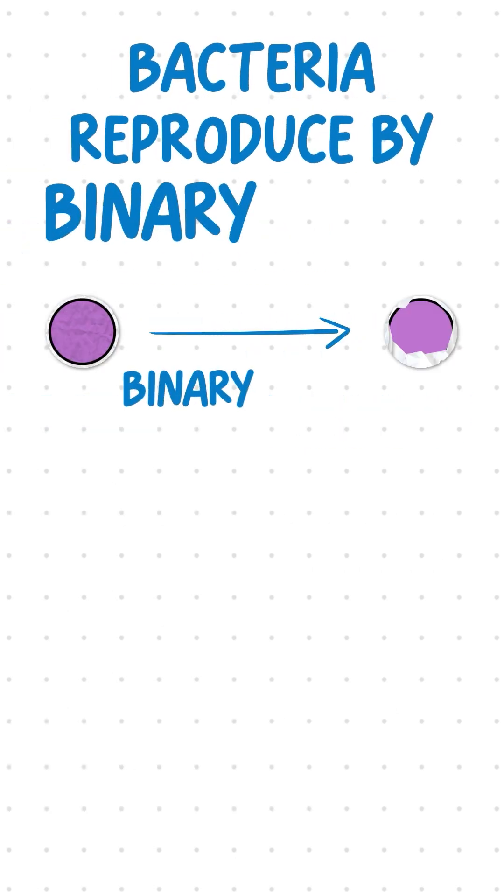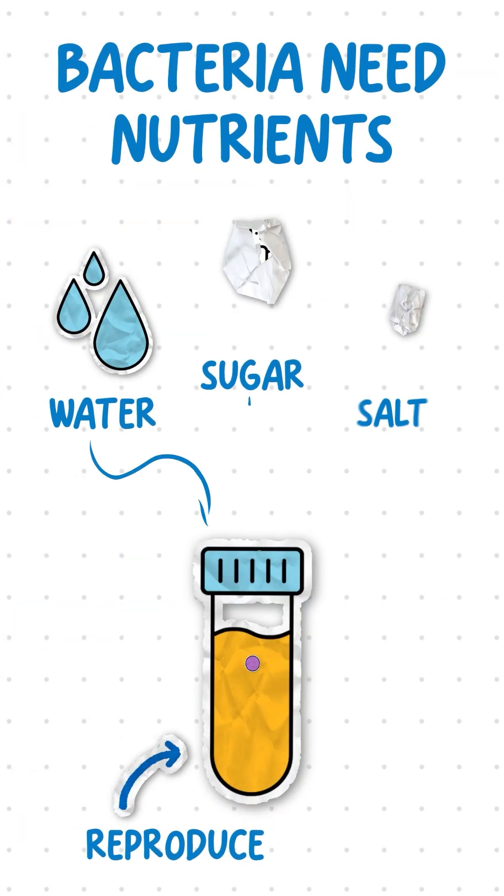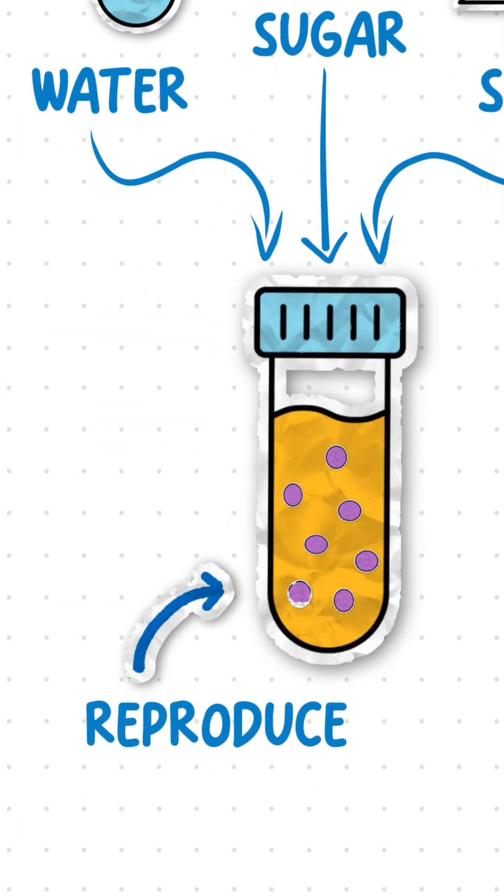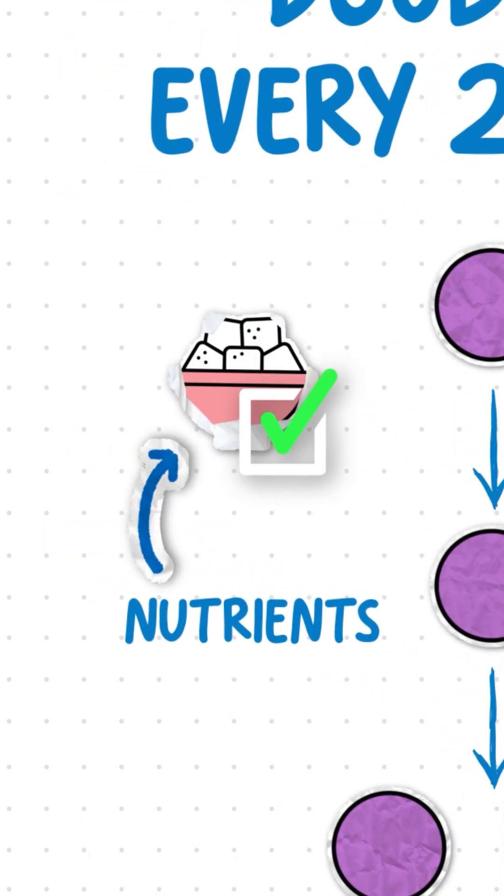Bacteria reproduce by binary fission, which is a simple type of cell division. Bacteria need nutrients like water, sugars, and salts to reproduce. They divide rapidly, doubling every 20 minutes if there are enough nutrients.